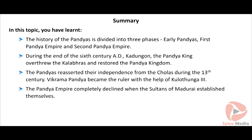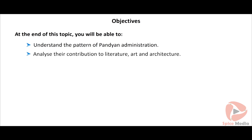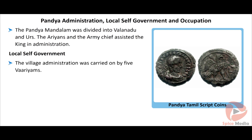The history of the Pandyas is divided into three phases: the early Pandyas, the 1st Pandya empire and the 2nd Pandya empire. During the last part of the 6th century AD, Kadungon, the Pandya king, overthrew the Kalabras and restored the Pandya kingdom. The Pandyas reasserted their independence from the Cholas during the 13th century. Vikrama Pandya became the ruler with the help of Kulotunga III. The Pandya empire completely declined when the Sultans of Madurai established themselves.